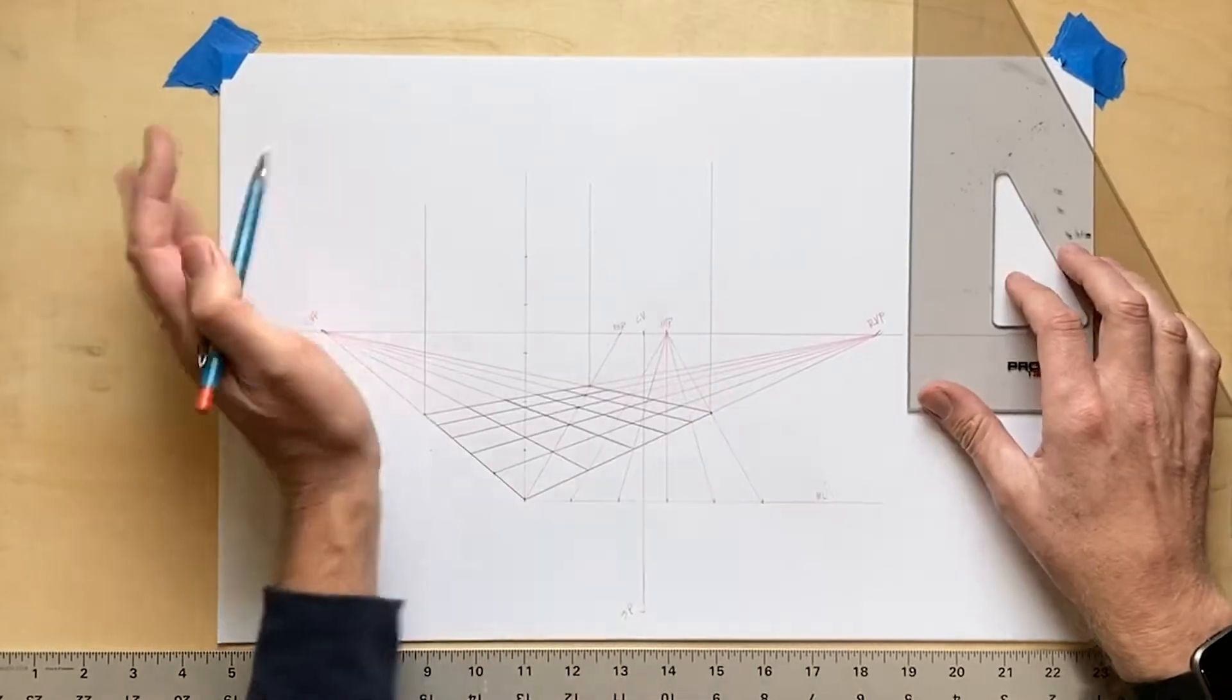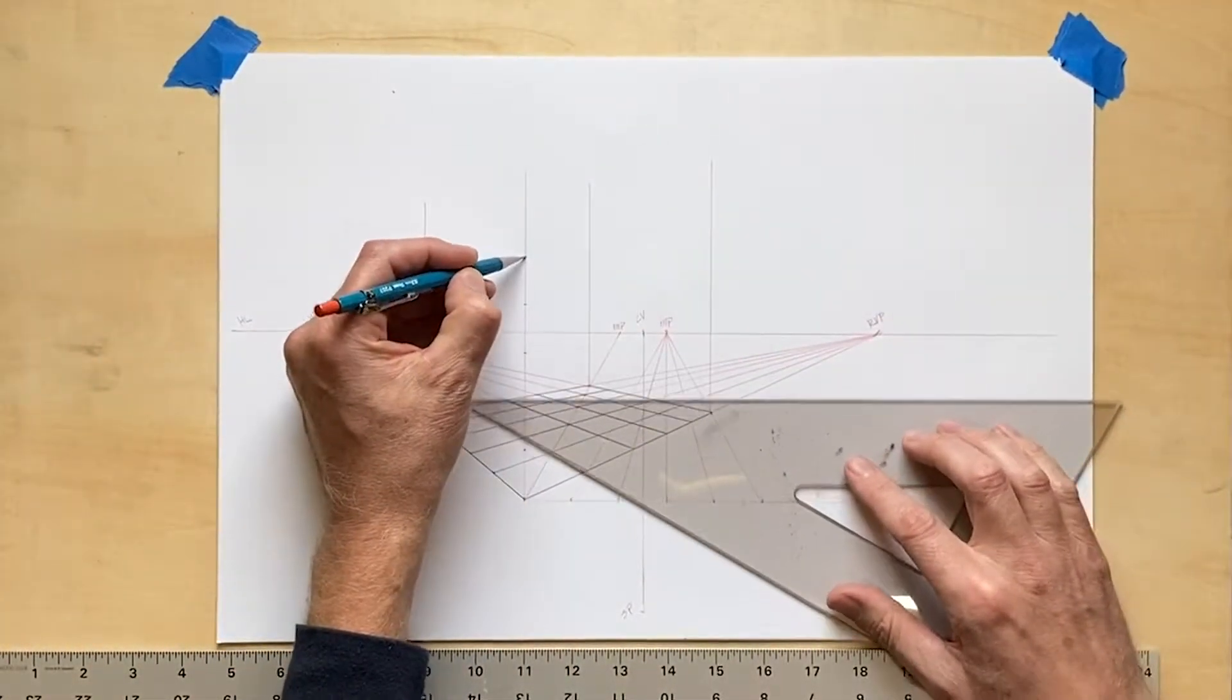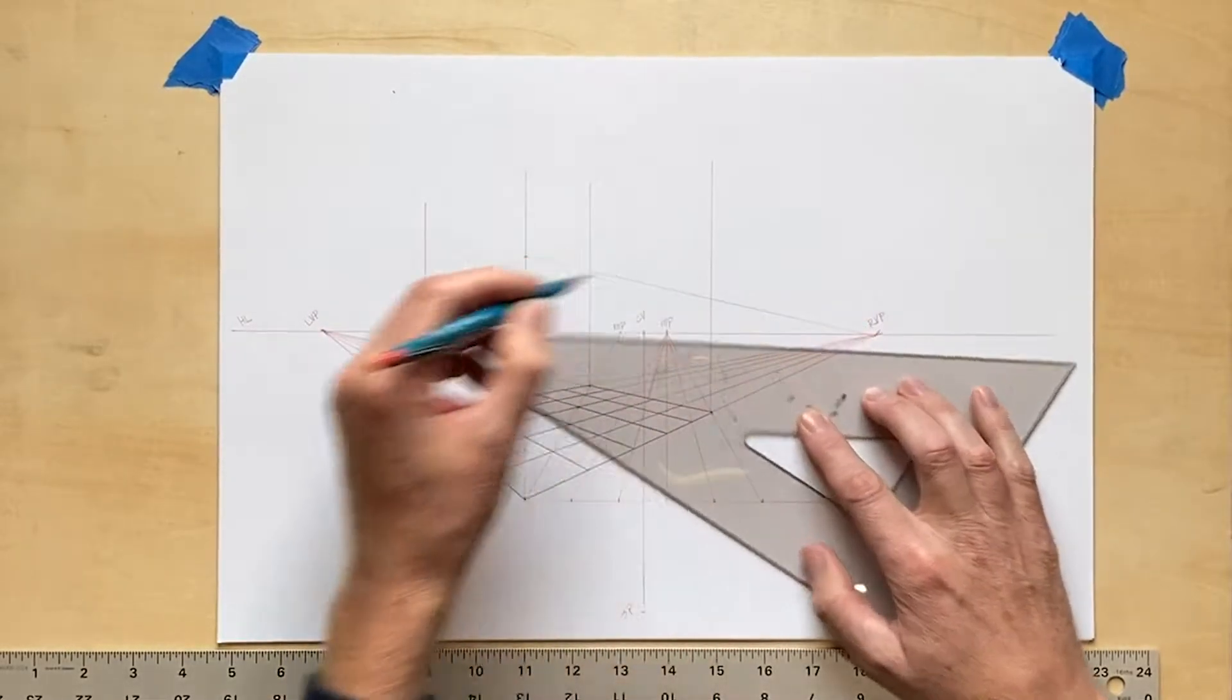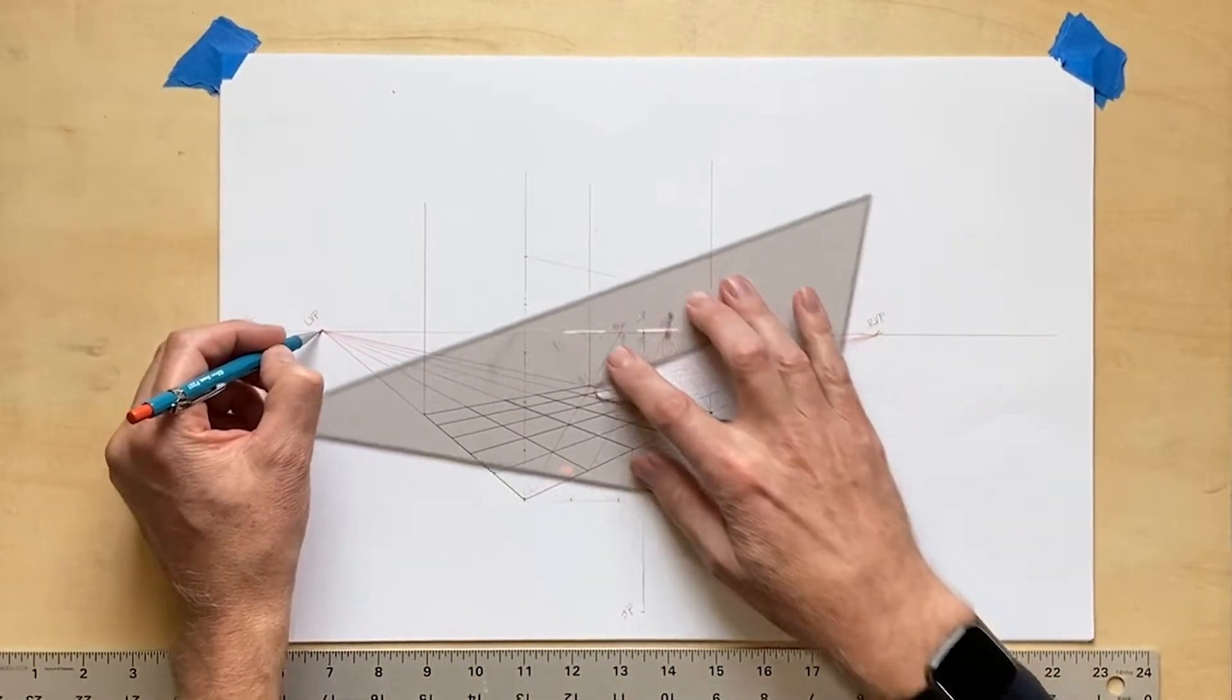First I will complete the room. I will add lines from the top point to each of the vanishing points on the left and right. This will give me the front edges of the room.